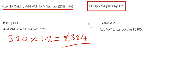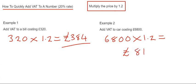Let's look at the second example. We've got to add VAT to a car costing £6,800. Again we just take our price of £6,800 and times that by 1.2. Just put this on your calculator and we get an answer of £8,160.